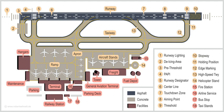Airport revenues are divided into three major parts: aeronautical revenue, non-aeronautical revenue, and non-operating revenue. Aeronautical revenue makes up 56%, non-aeronautical revenue makes up 40%, and non-operating revenue makes up 4% of the total revenue of airports.